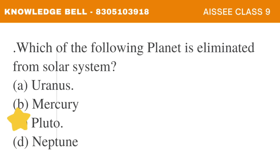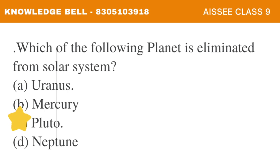Pluto is the planet that is no longer part of our solar system. The planets currently in the solar system are Mercury, Venus, Earth, Mars, Jupiter, Saturn, Uranus, and Neptune. Pluto was the one after Neptune but it is no longer a part of the solar system. So Option C, Pluto, is the correct answer.